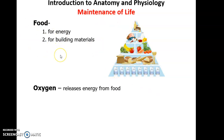Another thing we need is food. Food is important for two reasons: it provides a source of energy, since metabolism involves the use of energy and we need to make that energy by breaking down foods. The other important function is as raw building materials — we break food down into smaller molecules we can absorb and then use those building materials to make up new macromolecules that our body needs.